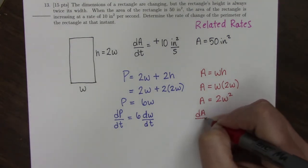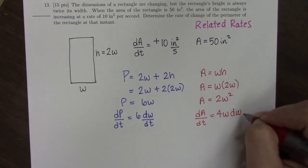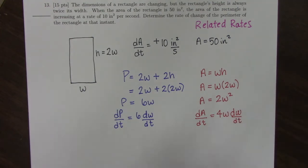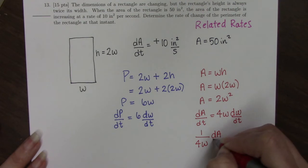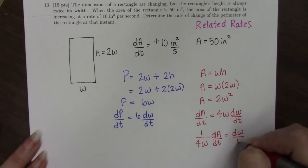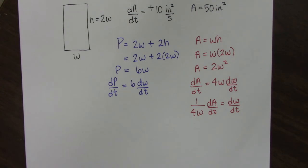So if I take the derivative of this function, I get dA/dt equals 4W dW/dt. So I can solve for dW/dt. I have 1 over 4W times dA/dt equals dW/dt. So all I should have to do here is plug in my dA/dt and W. But I don't have a number for W. I can find one for this moment.